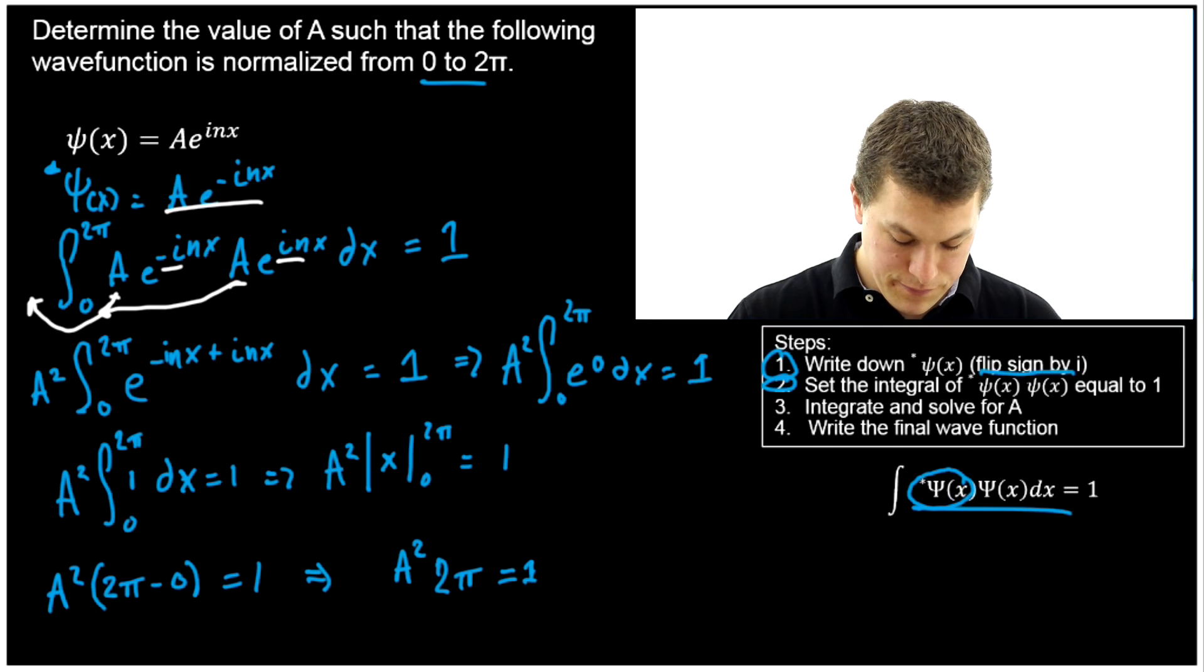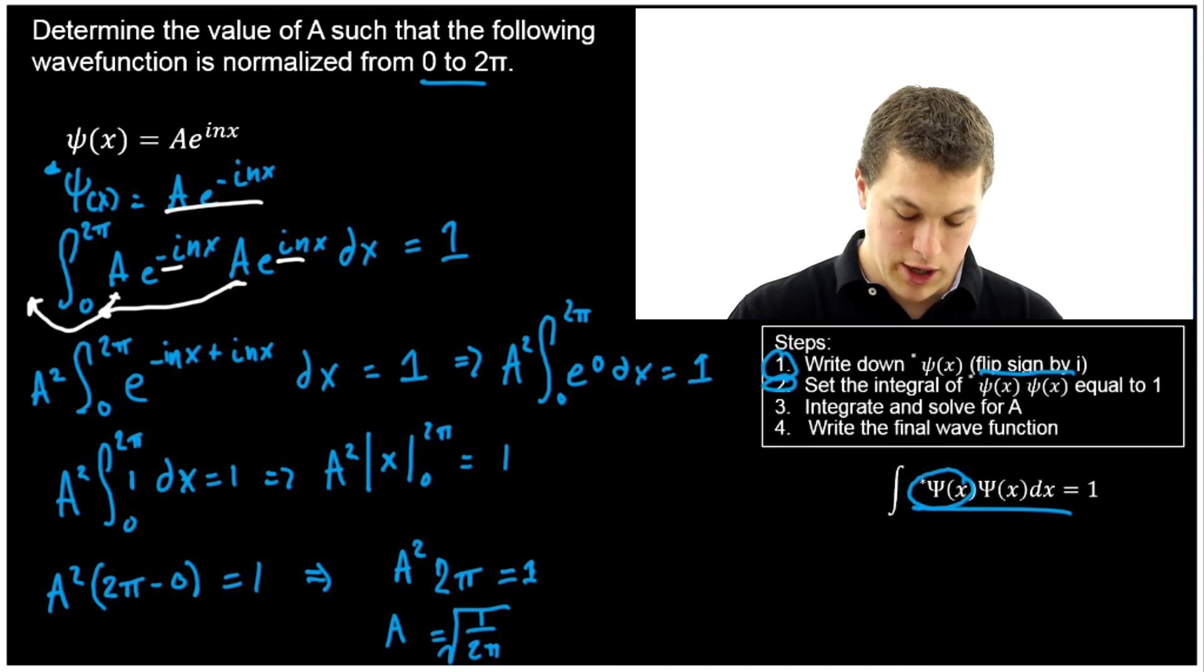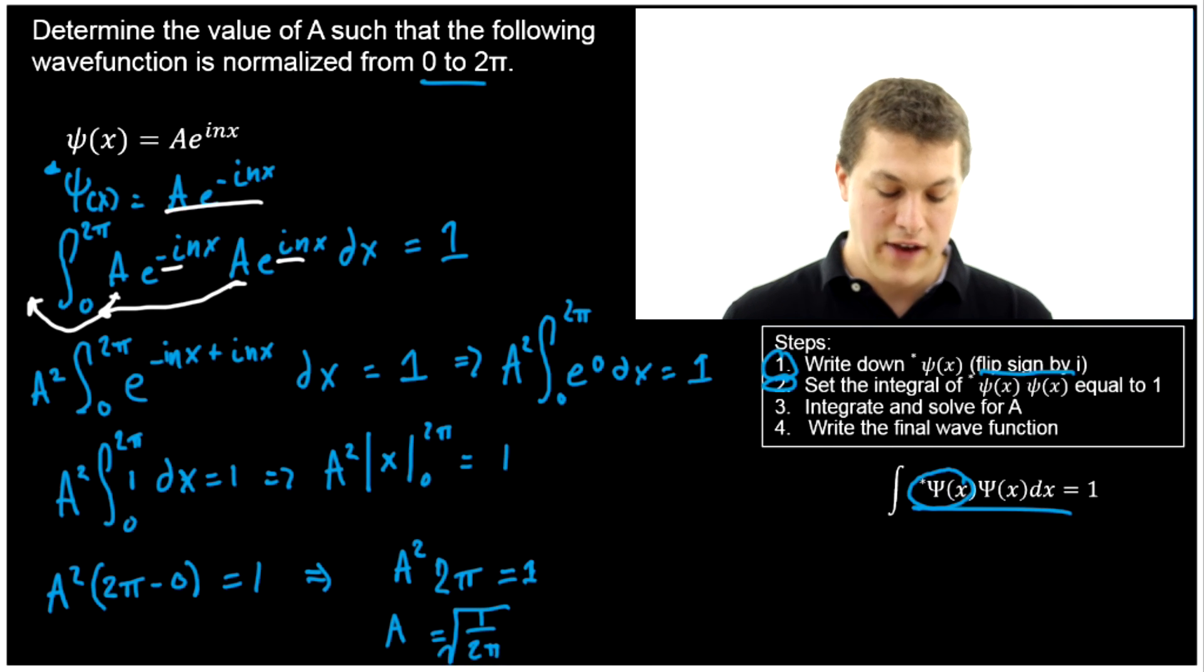Then we're going to solve for A. So I just divide both sides by 2π and I take the square root. It's going to get rid of my square portion over here, and we're going to get that A is equal to the square root of 1/(2π). That is the value of A.